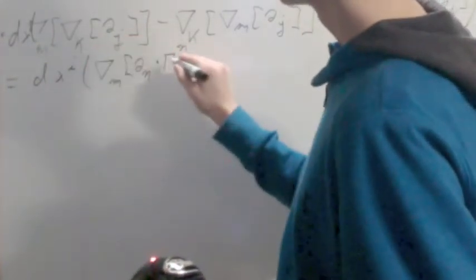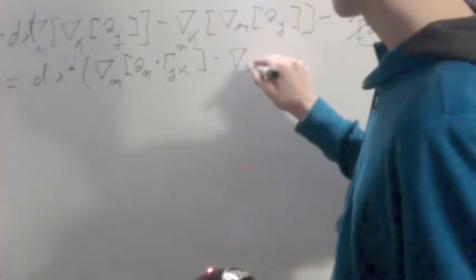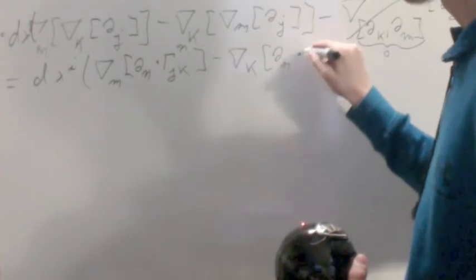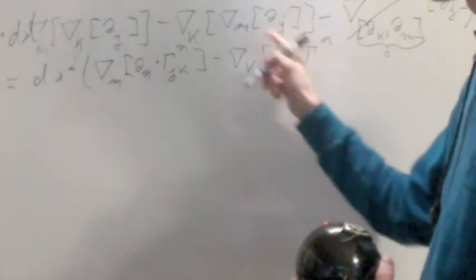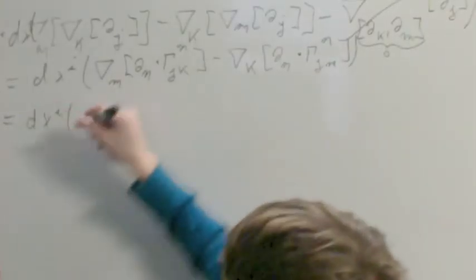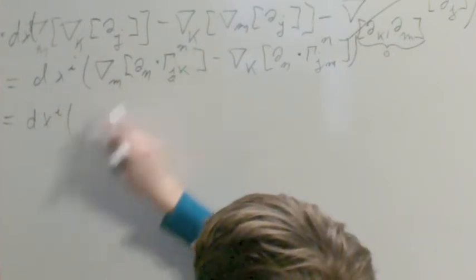Covariant along M of, now we're going to have del N times gamma superscript N, and we're going to do sub JK. And then that's going to be minus, we're going along K of del N times gamma, and in this time JM. That's just straight from covariant derivative or connection.